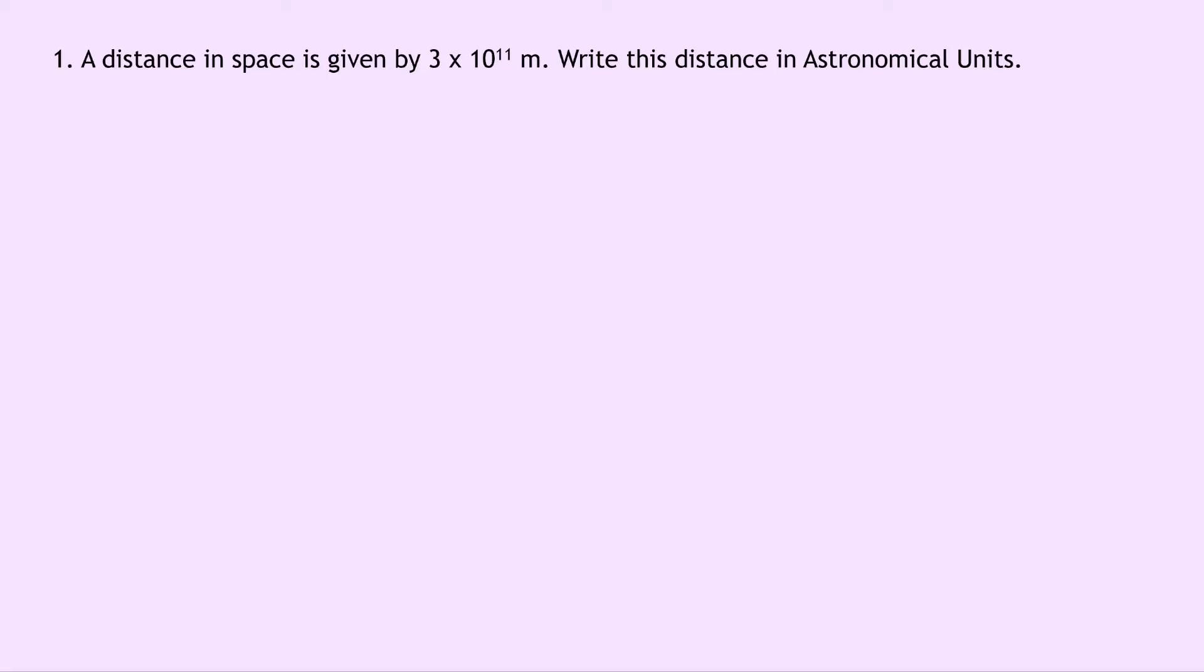Question 1 says that a distance in space is given by 3 times 10 to the 11 metres. Write this distance in astronomical units. Well remember if we want to go from metres to astronomical units, our number is going to get a lot smaller because astronomical units are a much larger unit than metres.